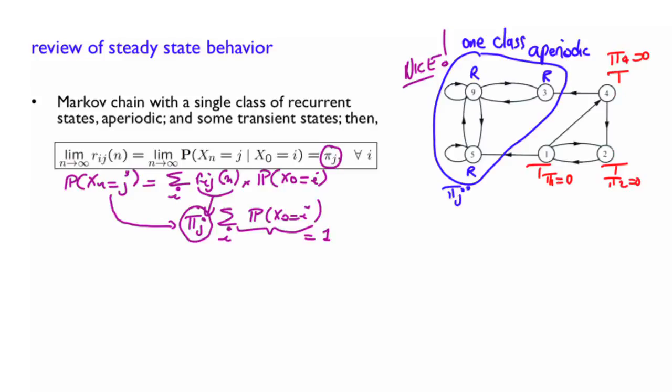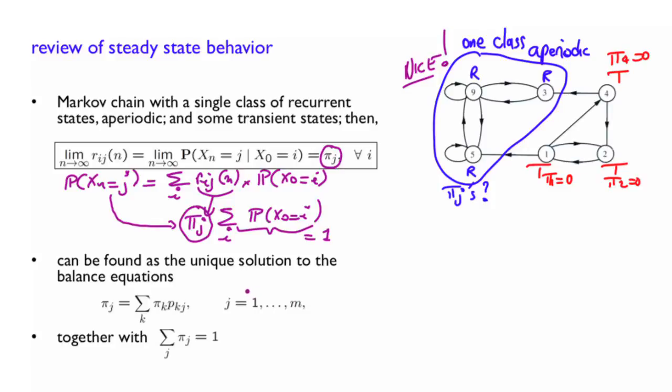Now, how do we calculate these? Well, for these states in the recurrent class, we compute them by solving a linear system of equations, which are called the balance equations, these. Together with an extra condition, the normalization equation here has to be satisfied, because these are probabilities and they have to sum up to 1.